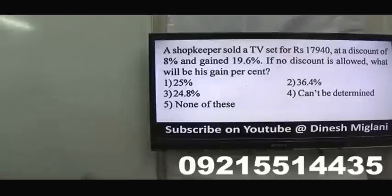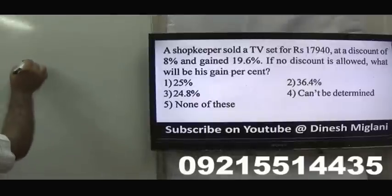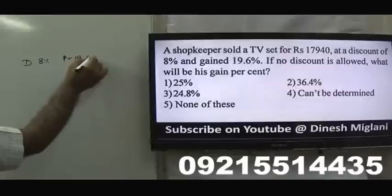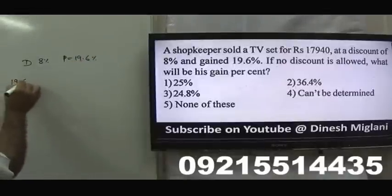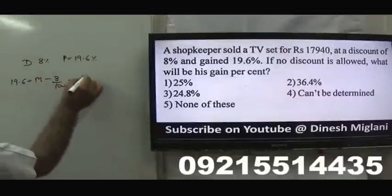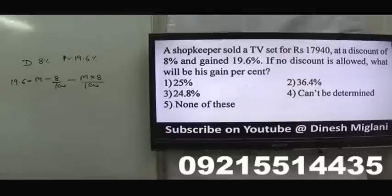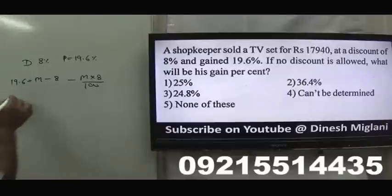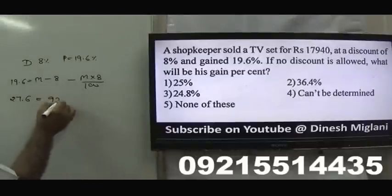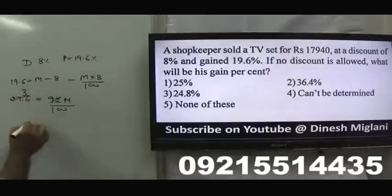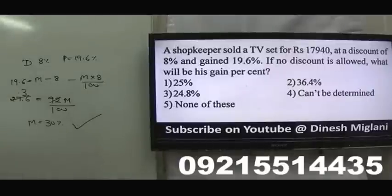A shopkeeper sold a TV set for ₹17,940 at a discount of 8% and gained 19.6%. If no discount is allowed, what is the gain percentage? Using P = M − D − MD/100: 19.6 = M − 8 − 8M/100. Solving: 27.6 = 92M/100, so M = 30%. Since no discount is allowed, markup equals profit percentage. Answer: 30%.